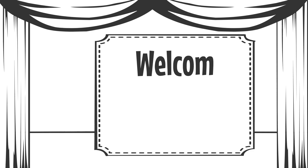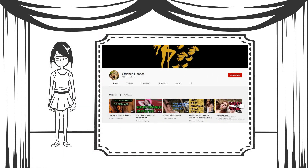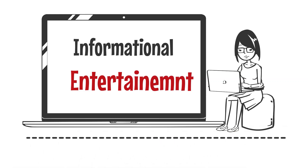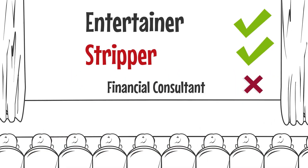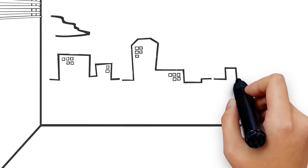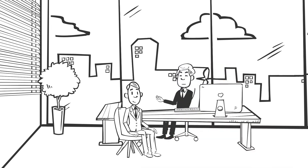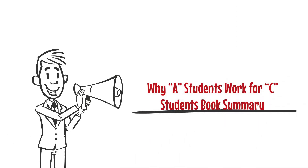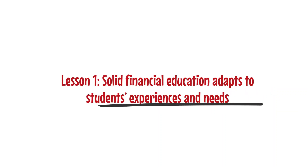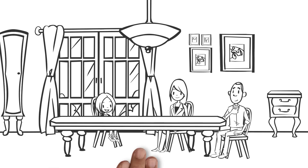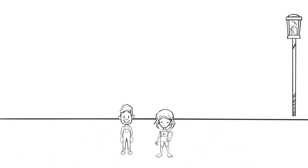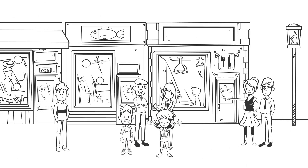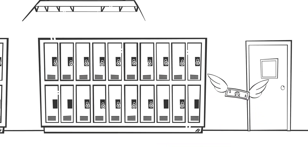Hi everybody, I am Ginger Wolf and welcome to Stripped Finance. This video is for informational and entertainment purposes only. I am a feature entertainer and stripper, not a financial consultant. Please speak to your financial advisor about any financial matters. With that out of the way, let's get into the video: 'Why A Students Work for C Students' book summary. Lesson one: solid financial education adapts to students' experiences and needs. What is the best time to teach a child about finances? Generally, a child can distinguish between one and five dollars after five years of age, and after that they are ready to begin their financial education.